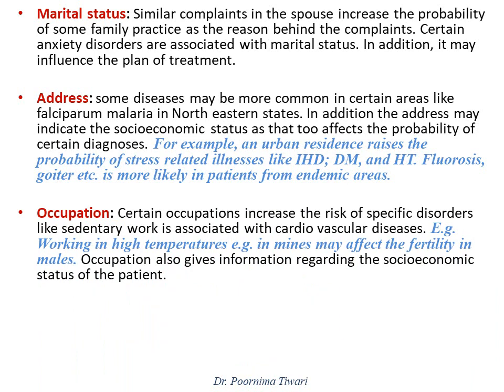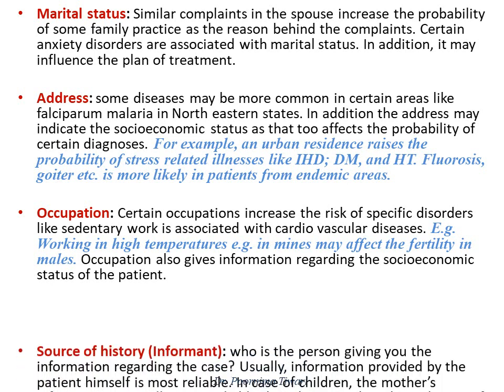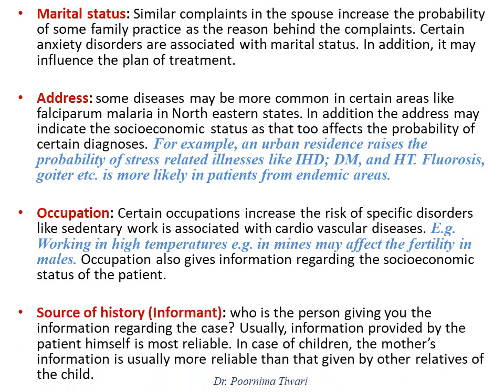Occupation is very important. Certain occupations increase the risk of certain disorders — sedentary work is associated with cardiovascular diseases, and working in higher temperatures, for example in mines, may affect fertility in males. Occupation also gives information regarding the socioeconomic status of the patient. Finally, consider who is providing the information — the informant. The person who is giving you the information and how reliable they are. Usually the patient himself is the most reliable informant; in the case of children, it is the mother who is usually the most reliable informant.